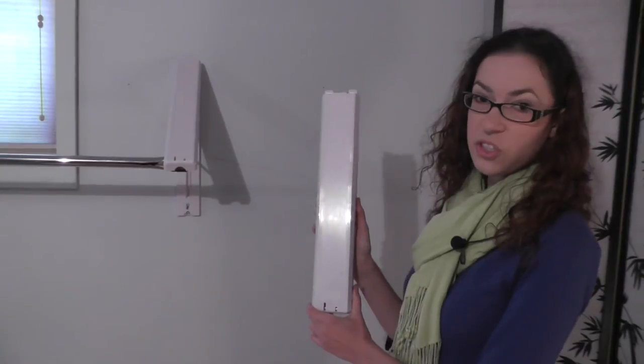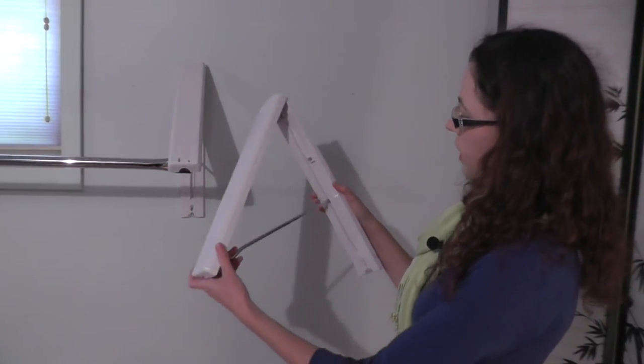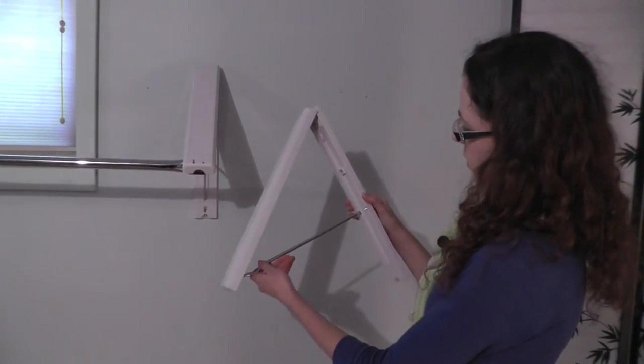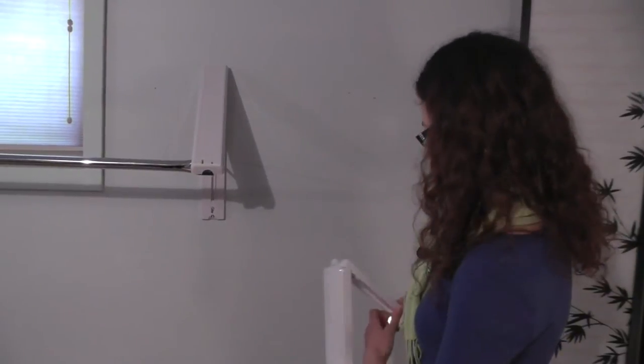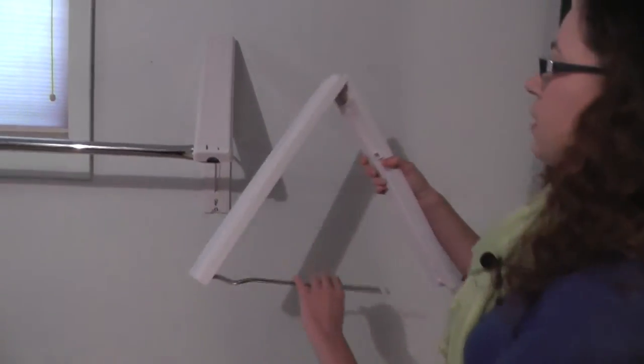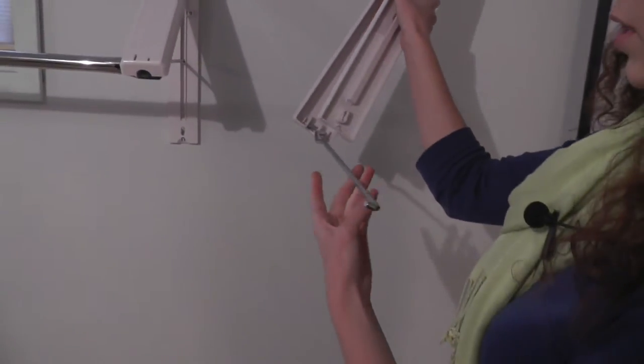Once the InstaHanger is attached to the wall, you then just open it and this metal bar slides and it actually comes out. And then this is how you hook on the closet rod.